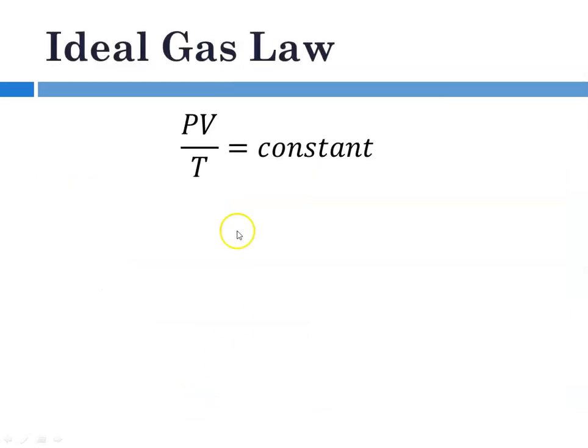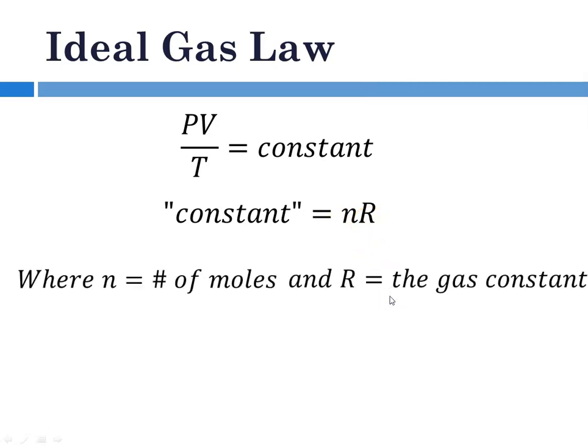The ideal gas law is taking this information, which we got from the combination of Boyle's, Gay-Lussac's, and Charles' law, that PV over T is equal to some constant. That constant has two components to it: n, the number of moles, and R, which is called the ideal gas constant.